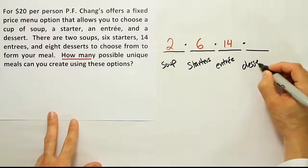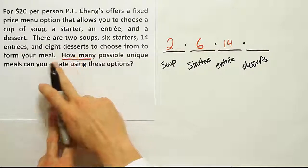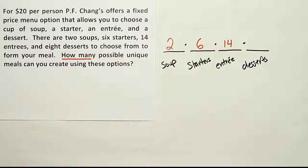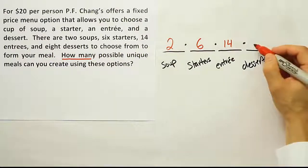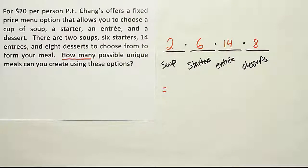And then the very last thing is how many desserts. For the desserts, it says that we can choose among eight desserts. So we're going to put eight in for that spot and then multiply them all together to get your final solution.